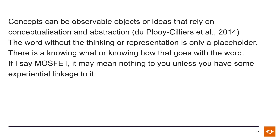Concepts can be observable objects or just ideas that rely on conceptualization and abstraction. Like a chair — we can observe it, point to it, and a community of people can all look at it with not much abstraction because we can all see it. However, something like a belief system, evil, good, bad — that is more abstract and requires some justification in terms of how you've conceptualized that into that class.